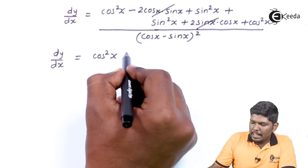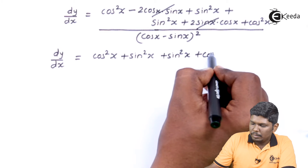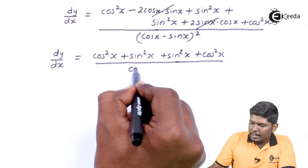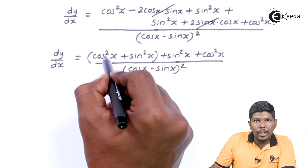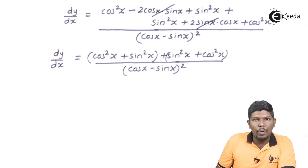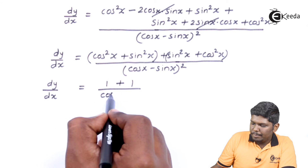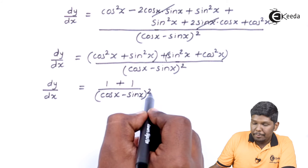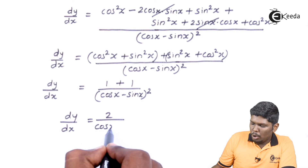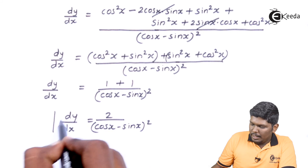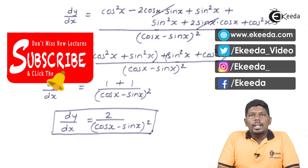The remaining terms are cos squared x plus sin squared x, plus sin squared x plus cos squared x, upon cos x minus sin x the whole square. Since sin squared x plus cos squared x equals 1, we get 1 plus 1. So dy by dx is equal to 2 upon cos x minus sin x the whole square. This is the derivative of the given function. I hope you understand this video, thank you for watching.